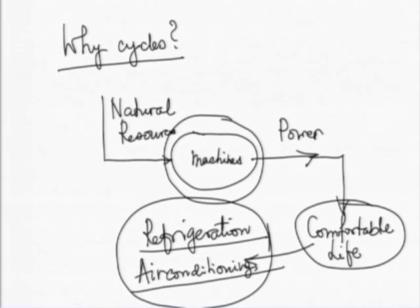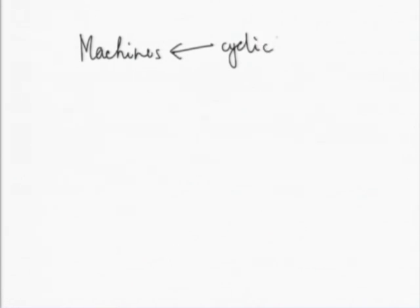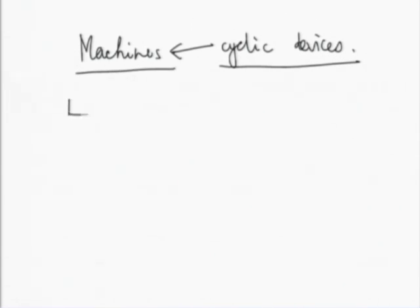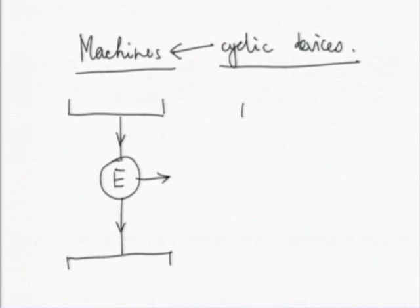So why cycles? We want to use these machines again and again — we do not want them to be consumed. For example, if you want to cool something, you can bring a slab of ice, but once that ice is melted you have to find another slab. We do not want to do that. We want a machine that uses natural resources and keeps on producing power for us. For that reason, such machines must work in some cycle. Machines must be cyclic devices because we want to use them again and again, and that brings us to thermodynamics — the two types of machines being the engine type and the refrigeration type.